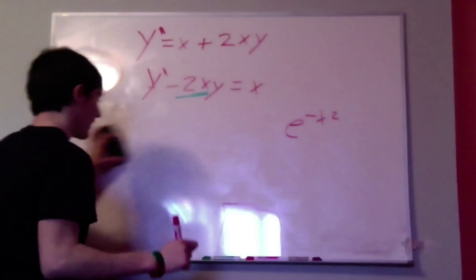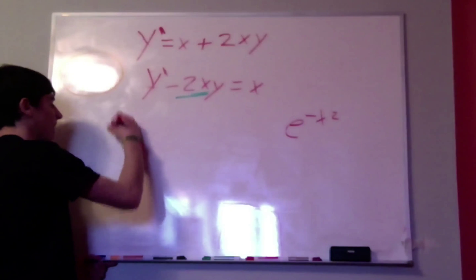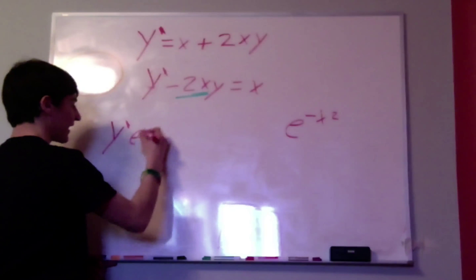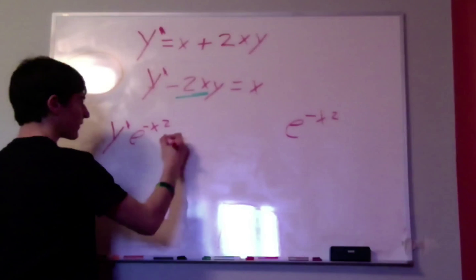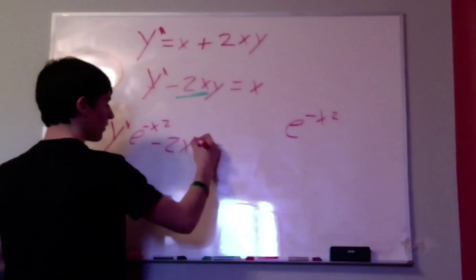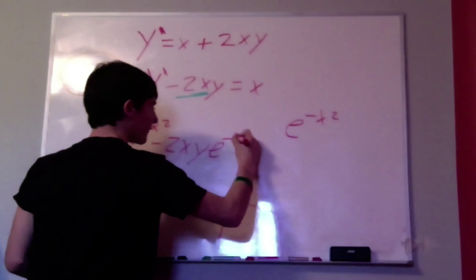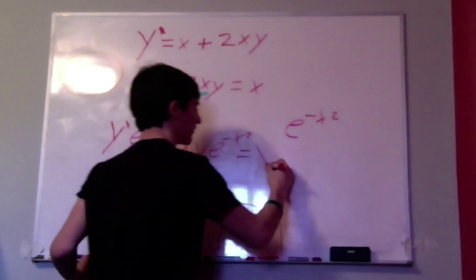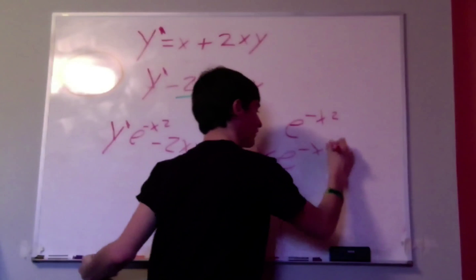And that something is going to be e to the integral of the coefficient of that term. So now we have y prime times e to the negative x squared minus 2xy times e to the negative x squared, equal to x times e to the negative x squared.